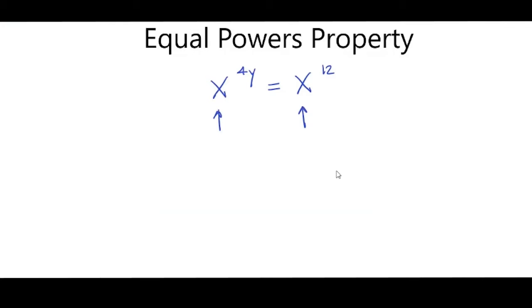So if you have the same base, that means that our exponents are also equal to each other. So that means that 4y is equal to 12 and we can divide both sides by 4 and y equals 3.